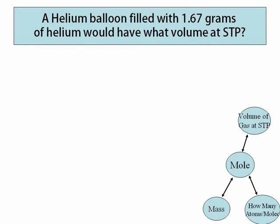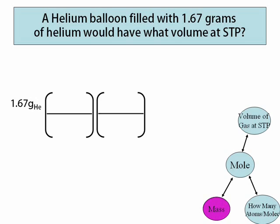Now we can solve a new type of mole problem. Let's say we have a balloon with helium in it, and it has 1.67 grams of helium. How big would that balloon be — what would its volume be at STP? The known information is 1.67 grams of helium. We'll set this up just like our other mole problems using the mole wheel. We're starting with mass and trying to find volume, so this is going to be a two-step problem with two sets of parentheses.